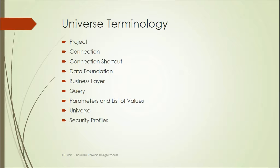The various terminologies to consider while developing a universe in IDT are: first, a project; then a connection, which is a local connection to that project; a connection shortcut, which is a secure connection that can be published to the repository; a data foundation, which is the layout of the database tables with their joins and relationships; and a business layer, which contains business-friendly objects based on the data foundation.